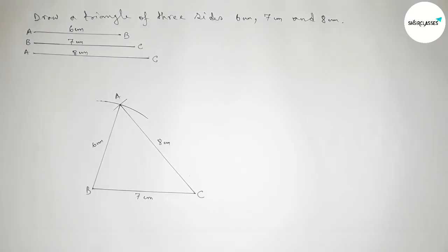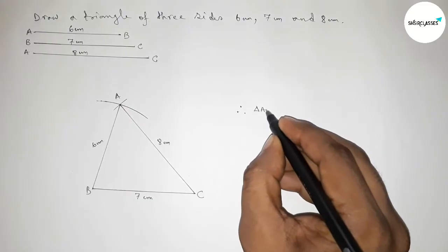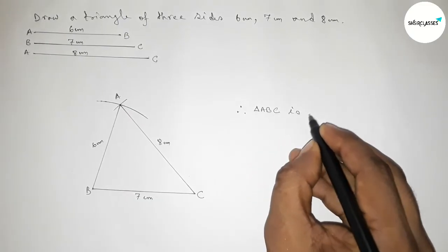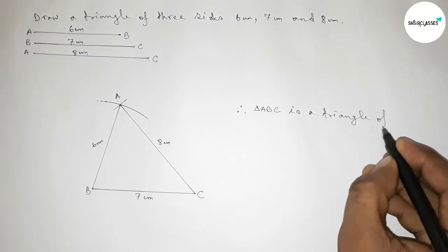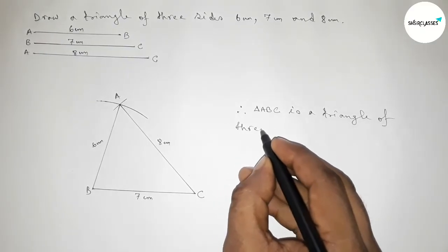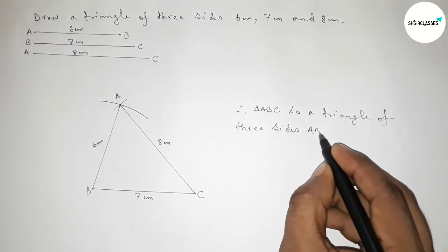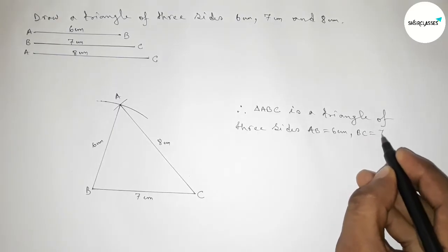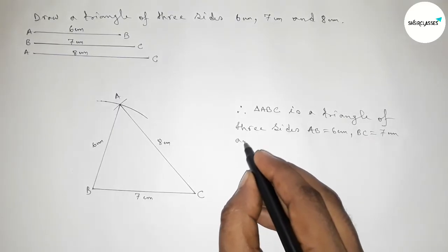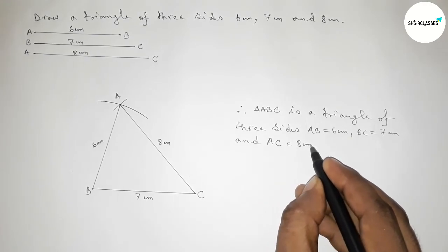Therefore triangle ABC is a triangle of 3 sides, where AB equals 6 centimeter, BC equals 7 centimeter, and AC equals 8 centimeter.